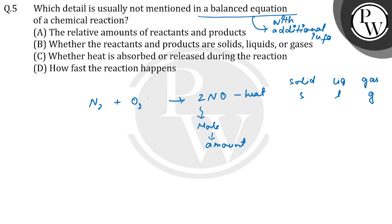We come to option D - how fast the reaction happens. This information we don't get, even with additional information in a balanced equation. So D is the correct option, where we don't get information about how fast the reaction will occur. I hope you don't have any difficulty understanding this answer. Thank you so much.